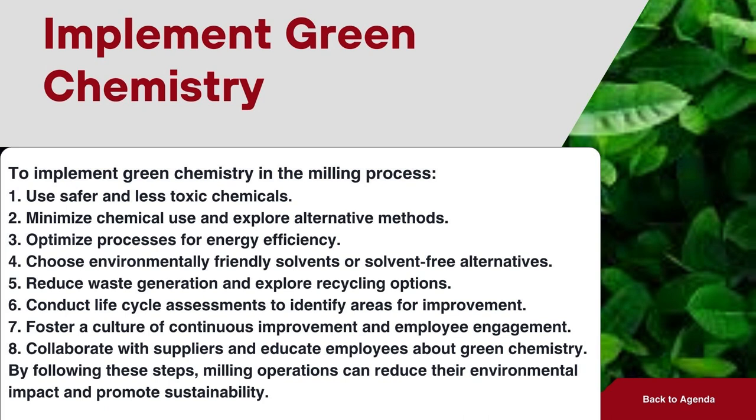Replace harmful chemicals with safer alternatives whenever possible. 2. Reduce chemical use. Minimize the amount of chemicals used in the milling process by optimizing formulations and processes. Consider alternative methods or technologies that require fewer or no chemicals. 3. Energy-efficient processes. Optimize milling processes to reduce energy consumption. This can include adjusting milling parameters, utilizing efficient equipment, and implementing energy management strategies. 4. Solvent selection. Choose environmentally friendly solvents, such as water-based or bio-based solvents, over hazardous organic solvents.